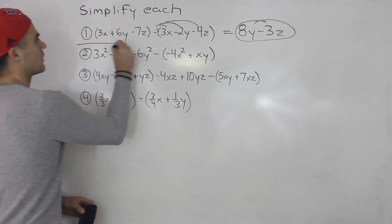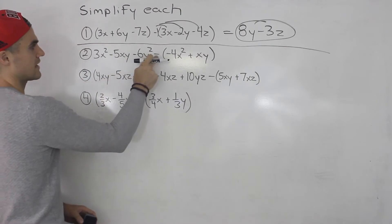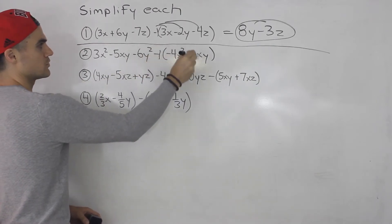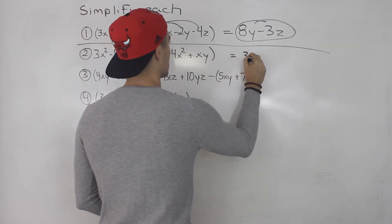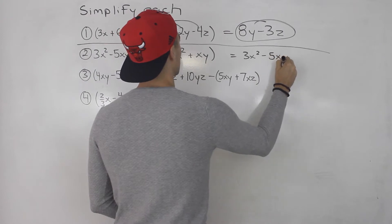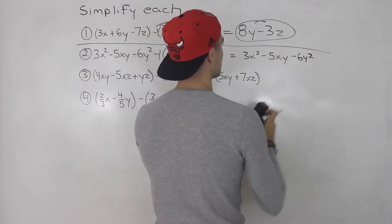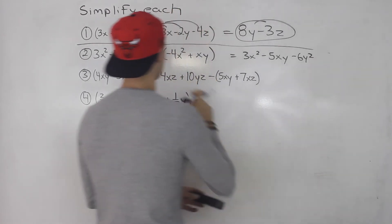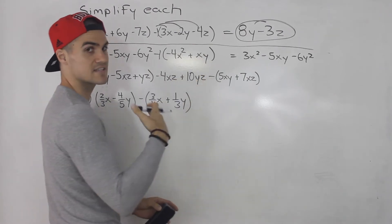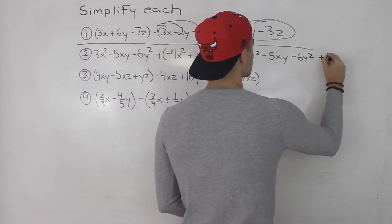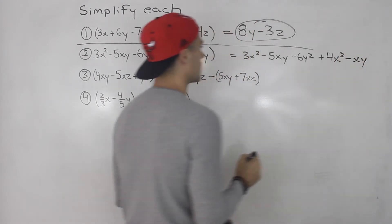Moving on to number 2 — same thing. This negative 1 here we would distribute inside the bracket. So we rewrite: 3x squared minus 5xy minus 6y squared. Distributing that negative 1 inside the bracket, basically everything stays the same but the signs change, so it would be plus 4x squared minus 6y.